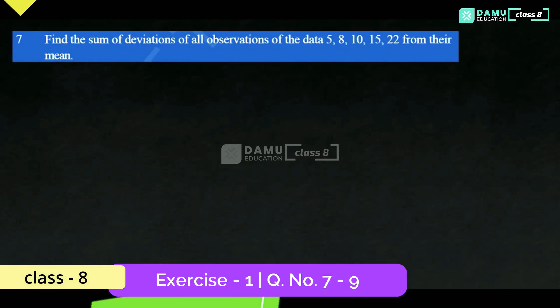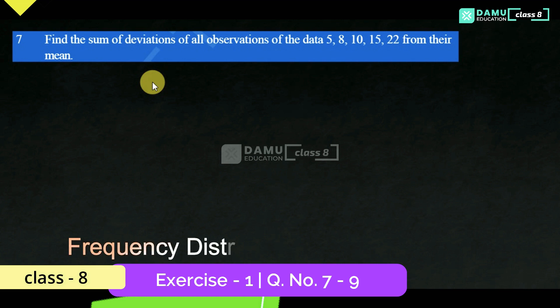In this module, we are going to discuss the 7th question: find the sum of deviations of all observations of the data 5, 8, 10, 15, 22 from their mean.